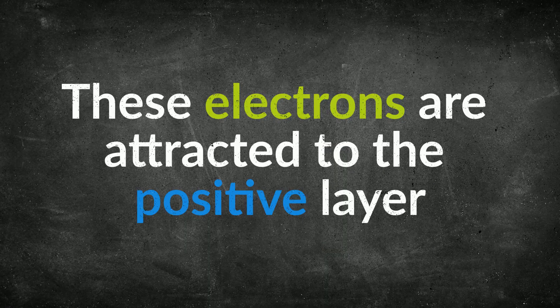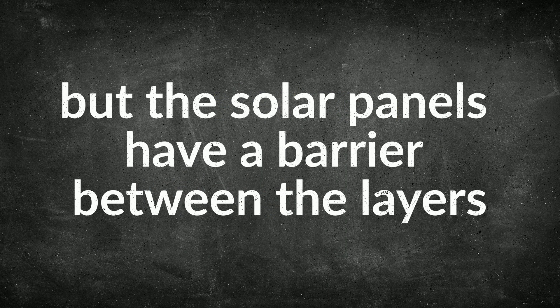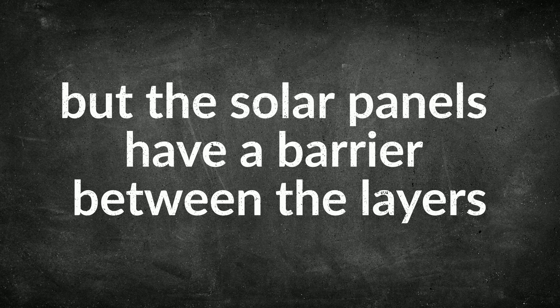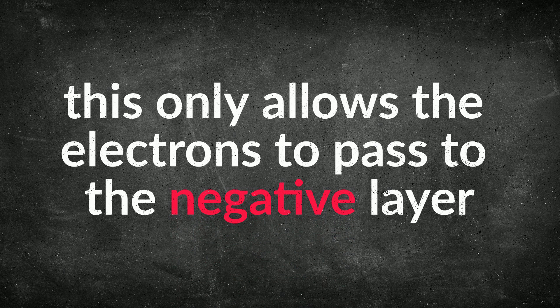These electrons are attracted to the positive layer, but the solar panels have a barrier between the layers. This only allows the electrons to pass to the negative layer.